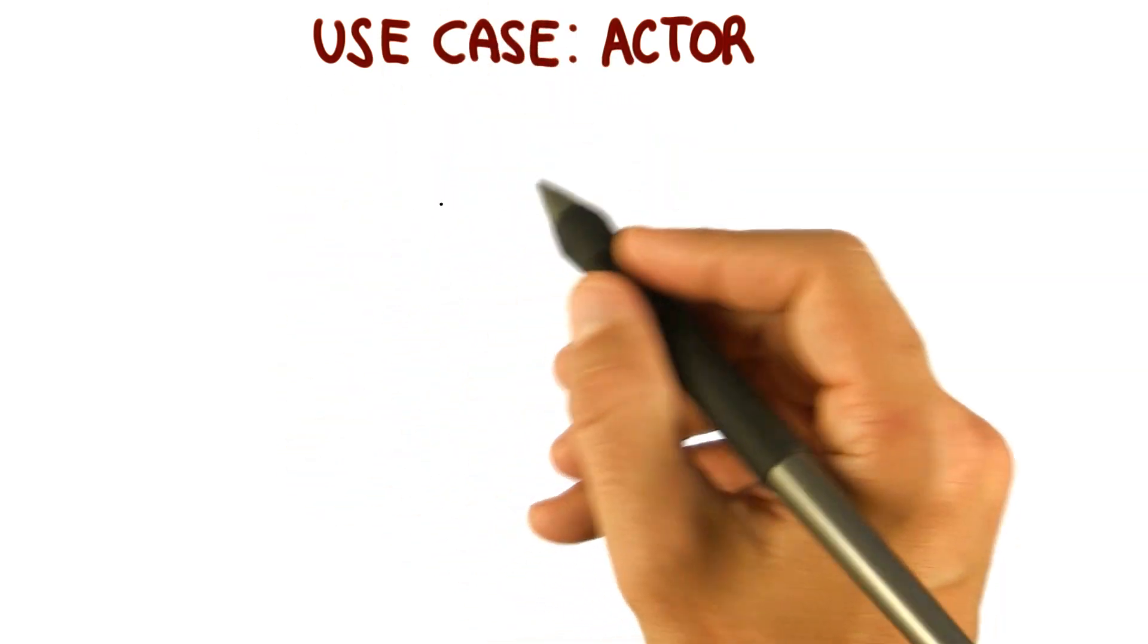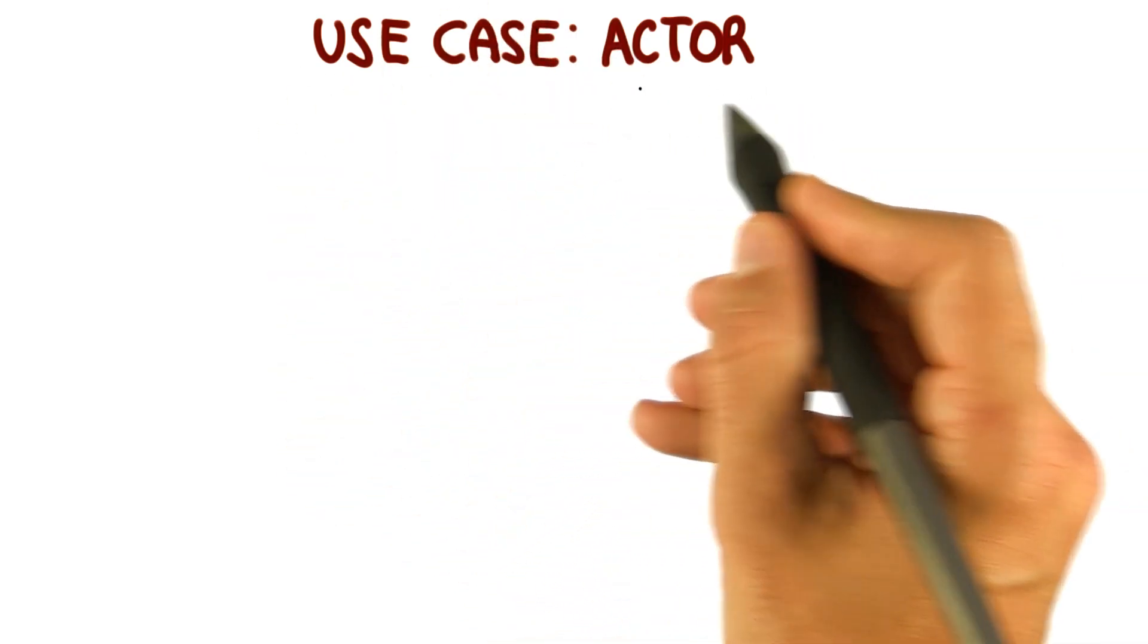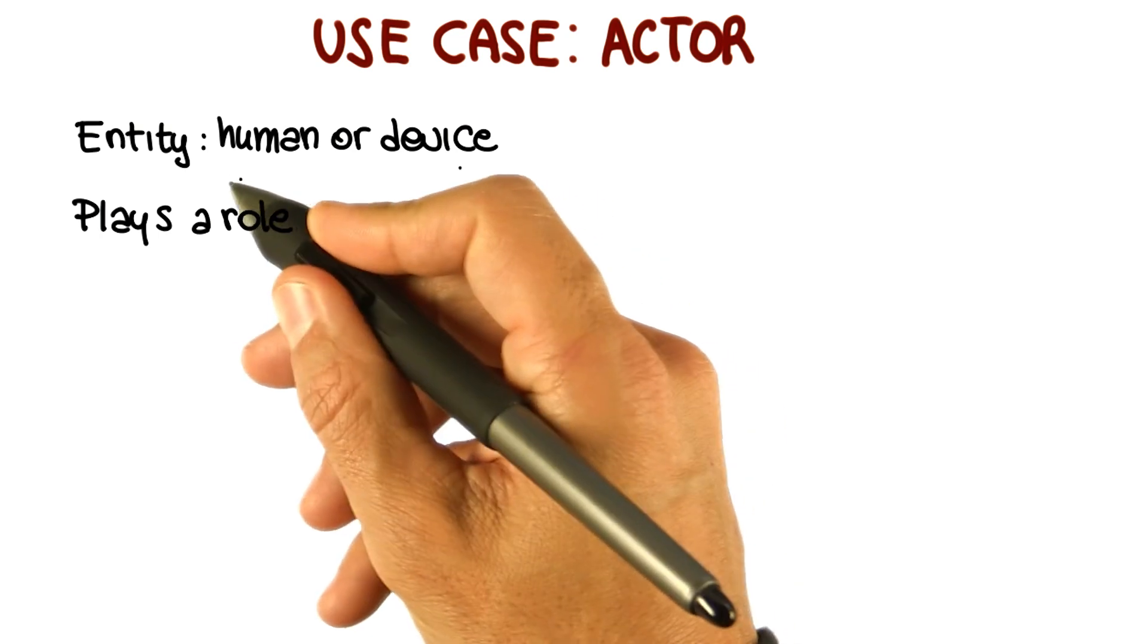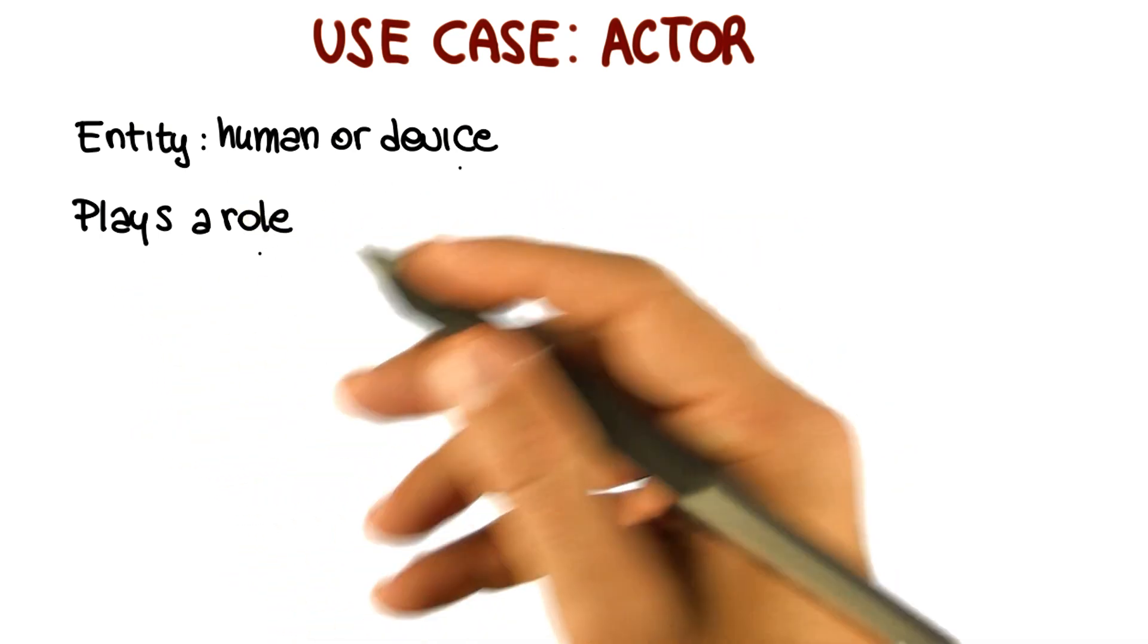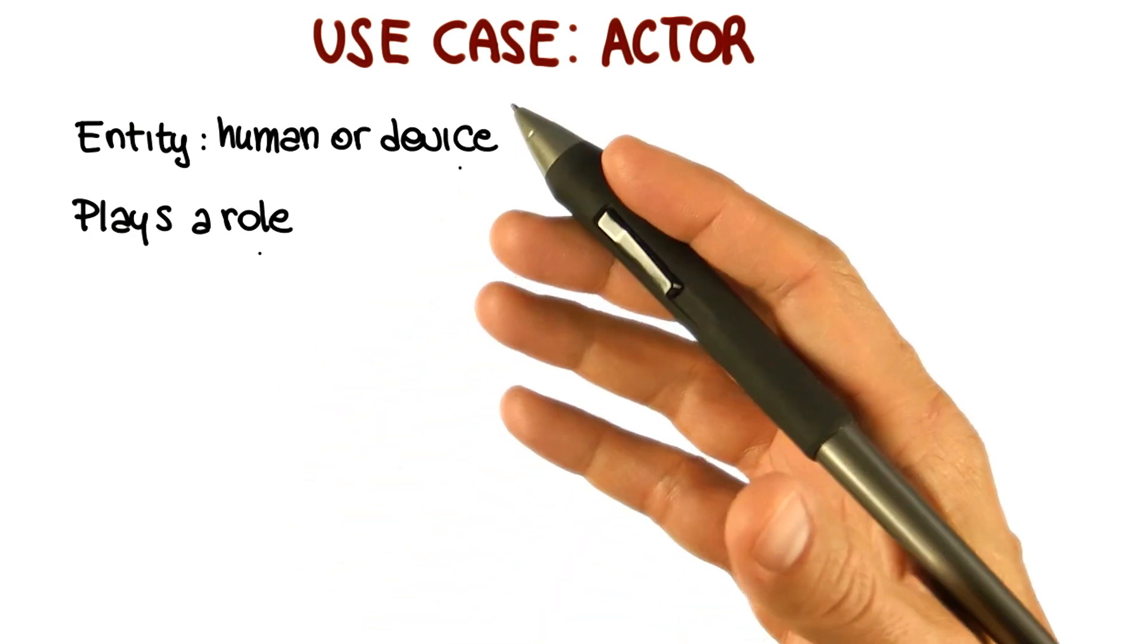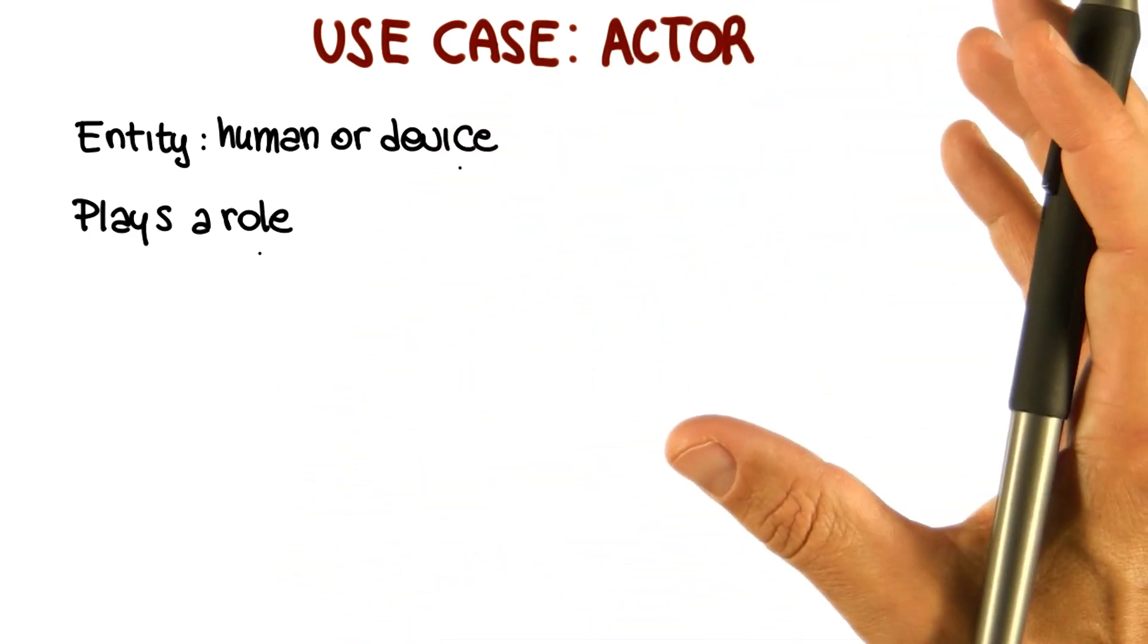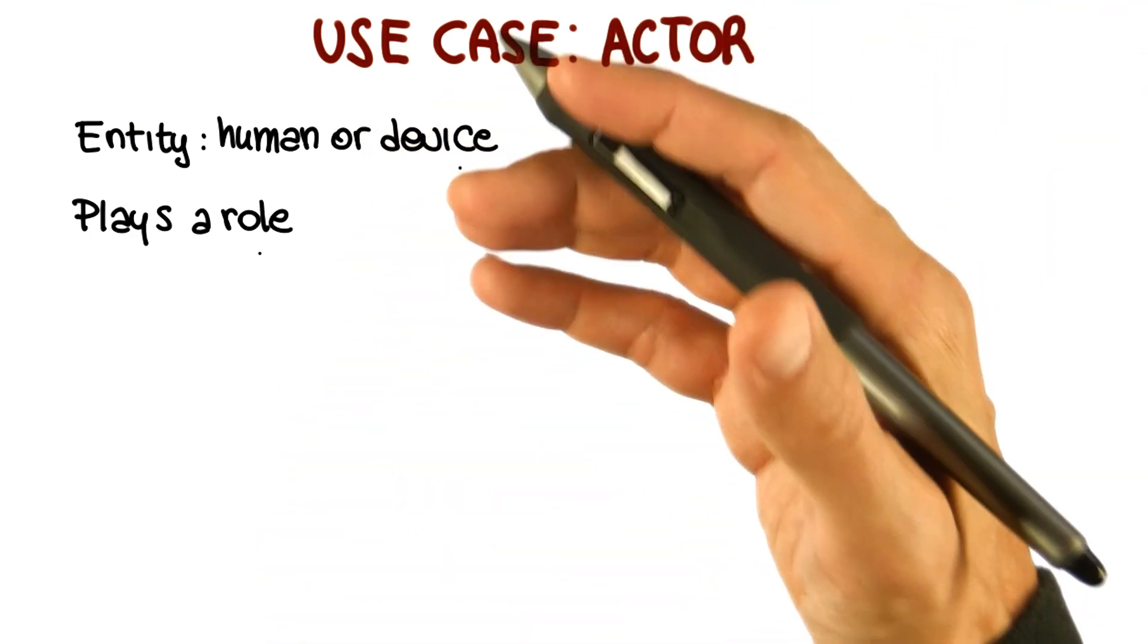Now, let's look at use cases in a little more detail and start by defining exactly what an actor is. An actor represents an entity which can be a human or a device that plays a role within my system. So that interacts with my system is some entity from the outside world with respect to my system that interacts with my system.